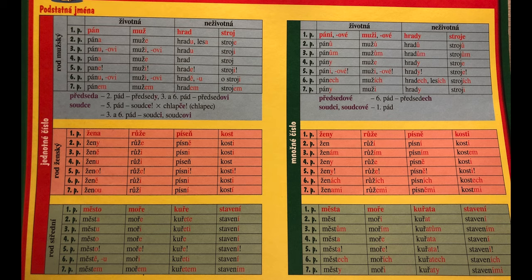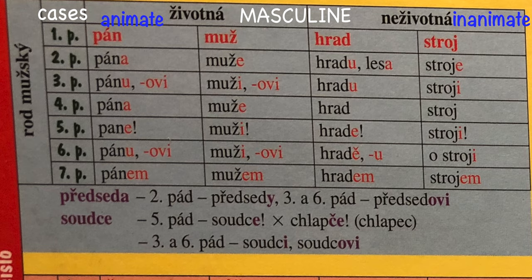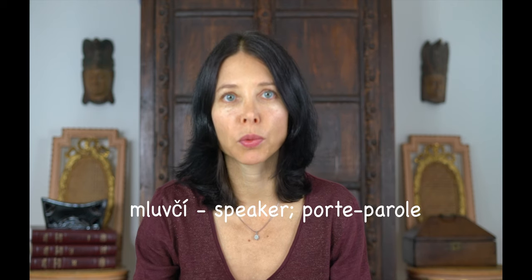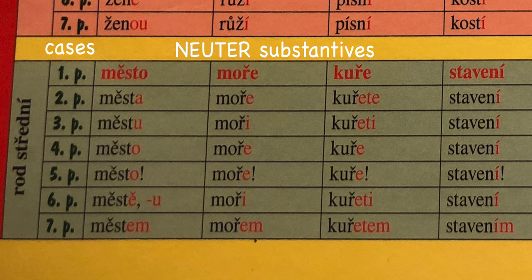We have already seen some modest declension tables. Have a look with me at a table I used at school. We have here pán, muž, hrad, stroj and předseda and soudce — you already know these. They omitted mluvčí — it's an old table, mluvčí hadn't been in vogue those days. We also have žena, růže, píseň, kost — soon to be covered by a feminine paradigms video. And we have město, moře, kuře, stavení — the four paradigms for the neuter, soon to be demonstrated by Nekan.